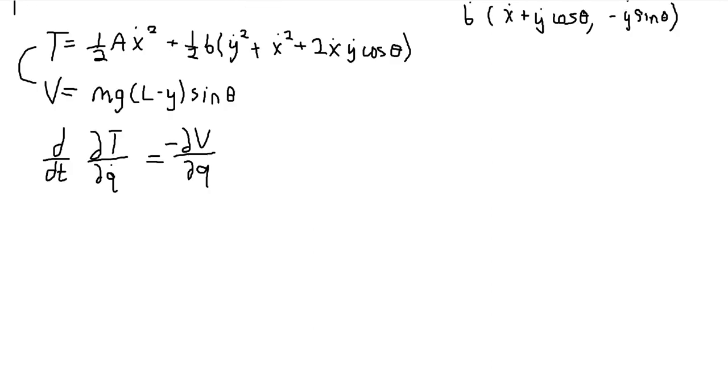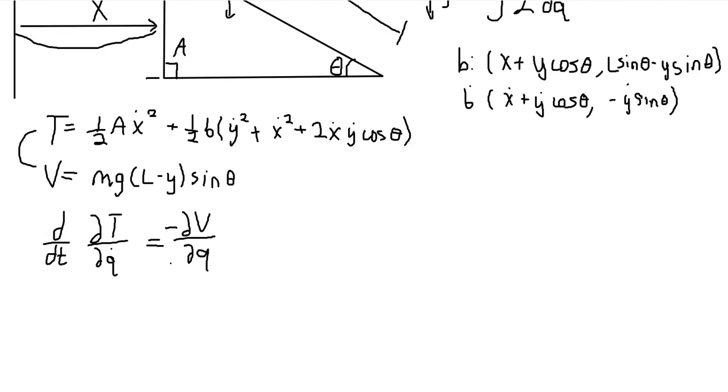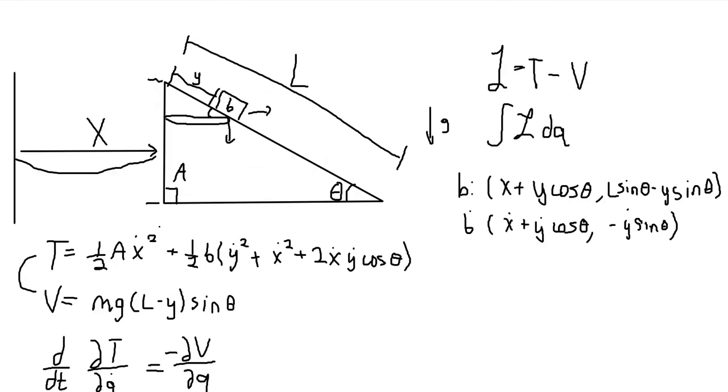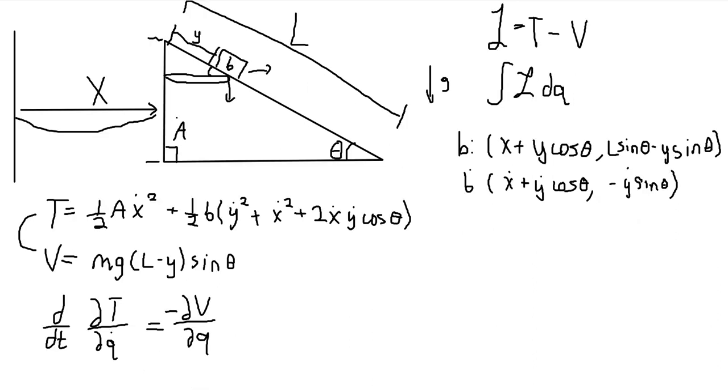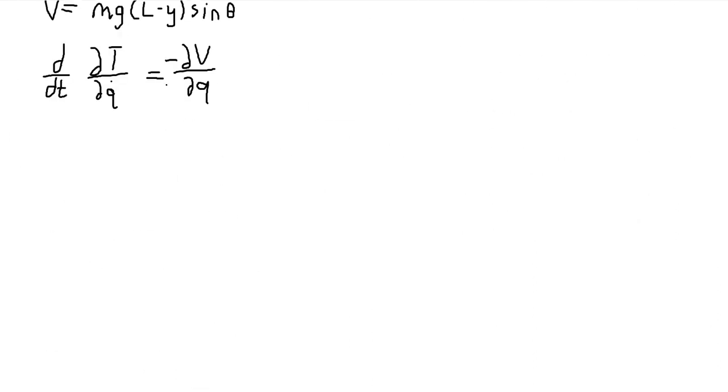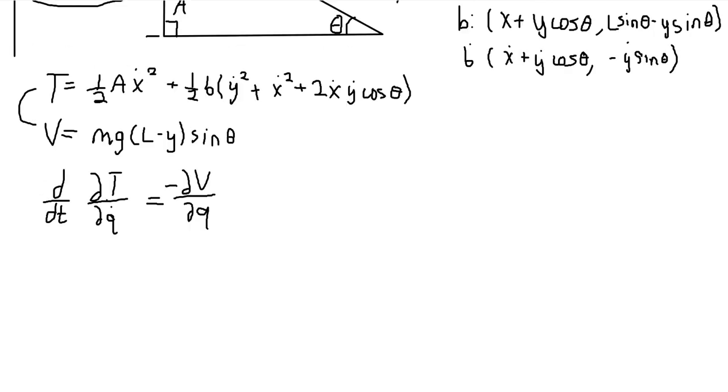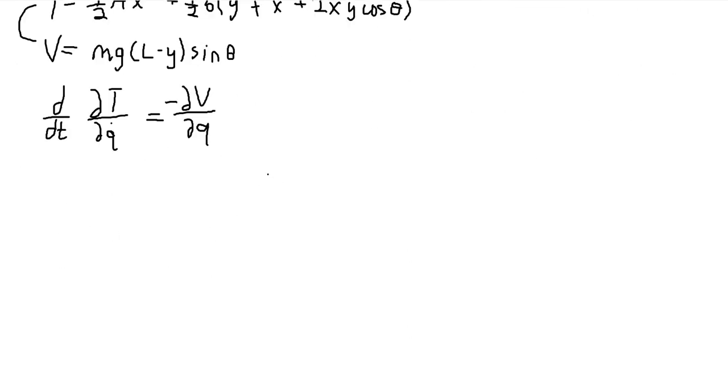And just to make this clear, when I'm saying general position and general velocity and whatnot, our coordinates here are X and Y. We can represent everything in this problem in terms of X and Y. So those are our general equations. We're going to have two of these for Q is equal to X and for Q is equal to Y. So let's do that.